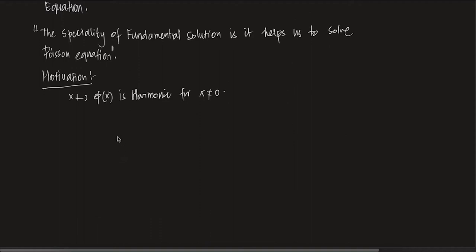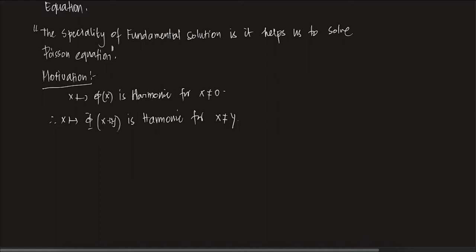If this happens, you just shift the origin to y. Here the origin is at 0, so you just shift it to y. Therefore x → φ(x − y) is harmonic for x ≠ y. Why? Because harmonic functions are translation invariant. Laplace equations are rotation and translation invariant. So basically if you translate the function, it is going to be harmonic.